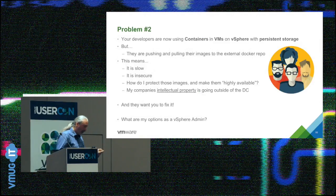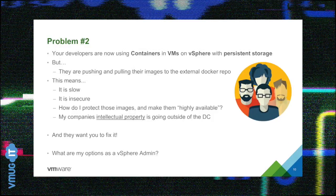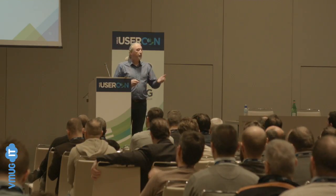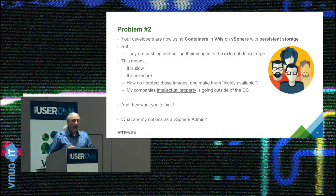Developers now have persistent storage, but there's always a but. They're pushing and pulling images to some external Docker hub or repository, which means it's slow because they're going outside to the internet. It's also insecure - you don't know who else might be retrieving those images. How do you protect them, make them highly available? And most importantly, your company's intellectual property is leaving your data center through these Docker pushes and pulls. As the vSphere administrator, you need to fix it.